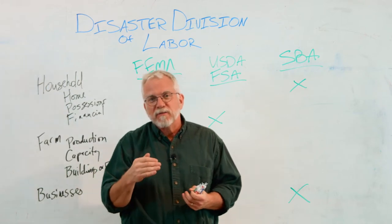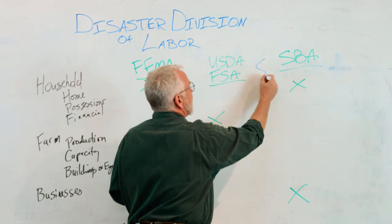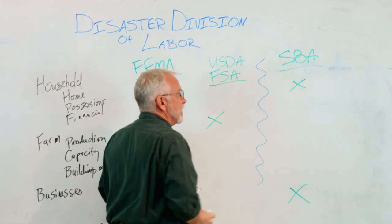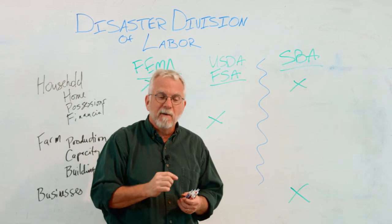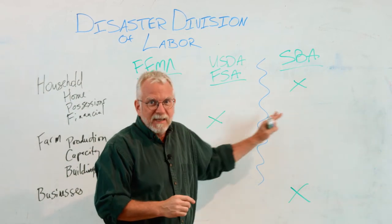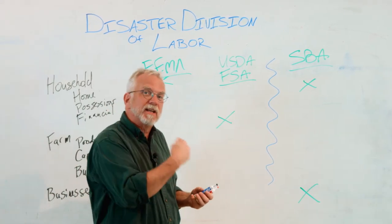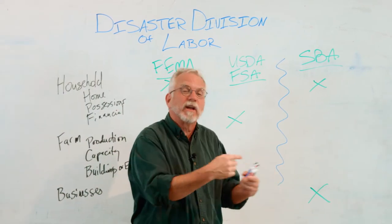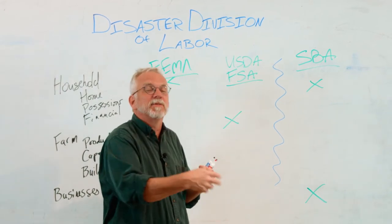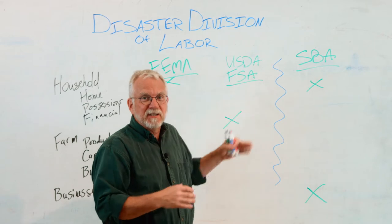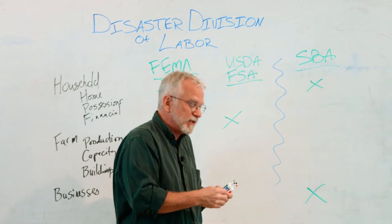One of the questions we've gotten over time is that the line between USDA and SBA can be a very fuzzy one, and how that's determined is a complicated process. It's important that you're in communication with each of these agencies and working through this with them. Sometimes those agencies need to take a little while to figure some of these things out too, so it's important to be having those conversations.